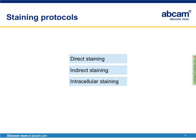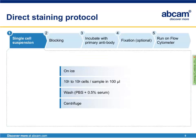The next step is staining of the cells or particles. There are direct and indirect staining protocols, as well as a protocol for staining intracellular proteins. Starting with the direct staining protocol — to ensure viability, it is recommended to keep the cells on ice during preparation and staining. A typical sample contains 10⁵ to 10⁶ cells resuspended in a volume of 100 microliters in a tube or round-bottom plate.